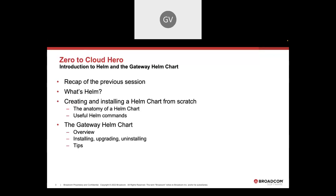We're going to further that today by talking about the current supported medium for deploying the gateway into Kubernetes, which is the gateway Helm chart. Before we do that, we'll take a look at what Helm is, and we'll also take a look at creating and installing a Helm chart from scratch. With that, we'll cover the anatomy of a Helm chart — what you get when we go through that process. And I'll also show you some useful Helm commands that you can run to roll back, to get values from a release, and so on.